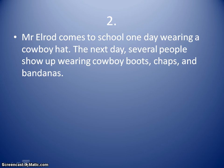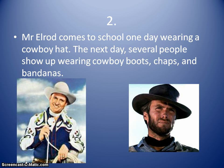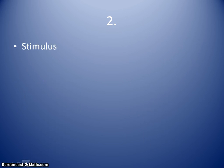The next example: Mr. Elrod comes to school one day wearing a cowboy hat. The next day, several people show up wearing cowboy boots, chaps, and bandanas. So Mr. Elrod's wearing the cowboy hat, and then other people take on the idea of dressing up in Western wear — maybe just dressing it up a little like Mr. Gene Autry. What kind of diffusion would that be? That's going to be an example of stimulus diffusion, because students came in not necessarily wearing the hat, but wearing different elements of cowboy Western wear.